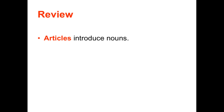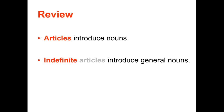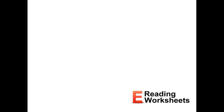In review, articles are special adjectives that introduce nouns. There are only three articles in the entire English language: a, an, and the. Indefinite articles are used to introduce general nouns — that would be the words 'a' and 'an.' And the definite article 'the' is used to introduce a specific noun.